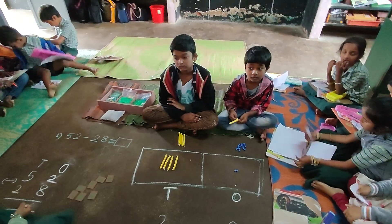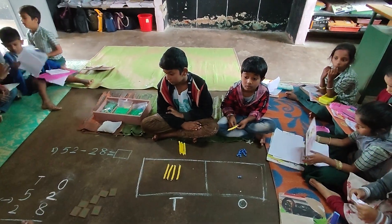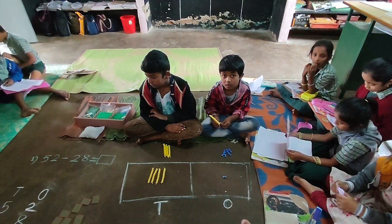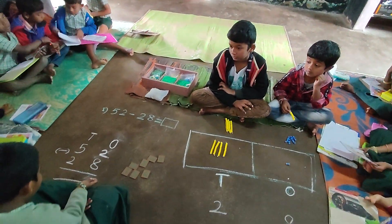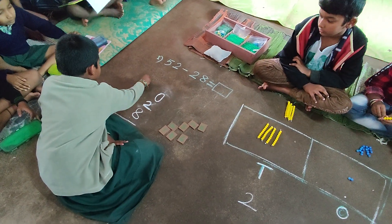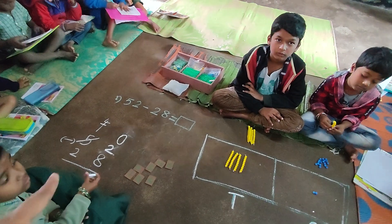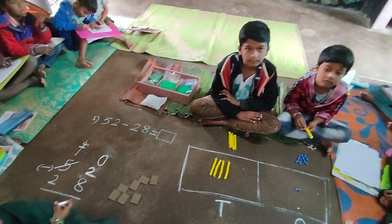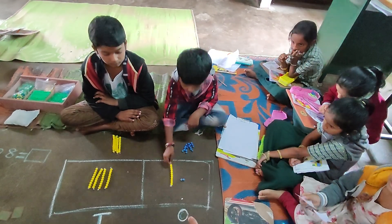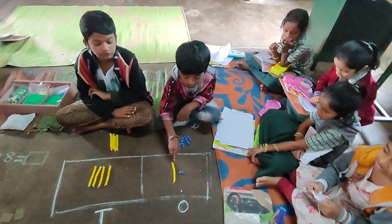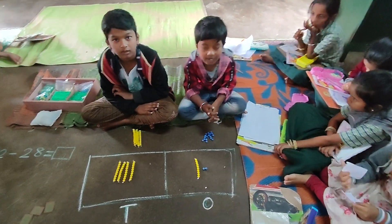So now, Ratnaveni, in the tens place what do you have to write? One ten has gone to the ones place, so there you write four. Five tens become four. And now that one ten has come to the ones place — count how many ones are there. Ten, eleven, twelve. How many? Twelve.